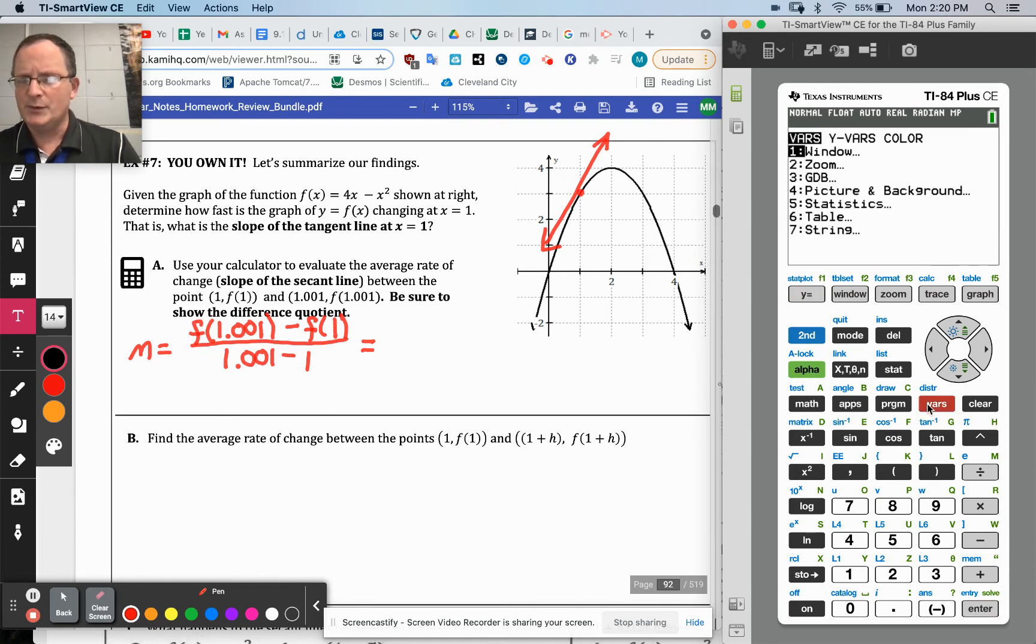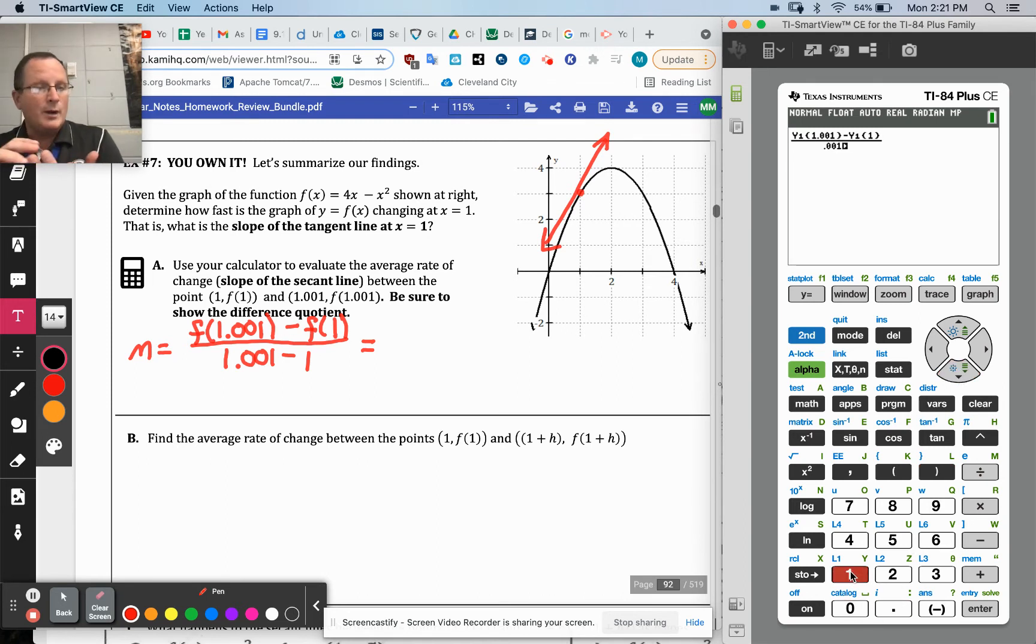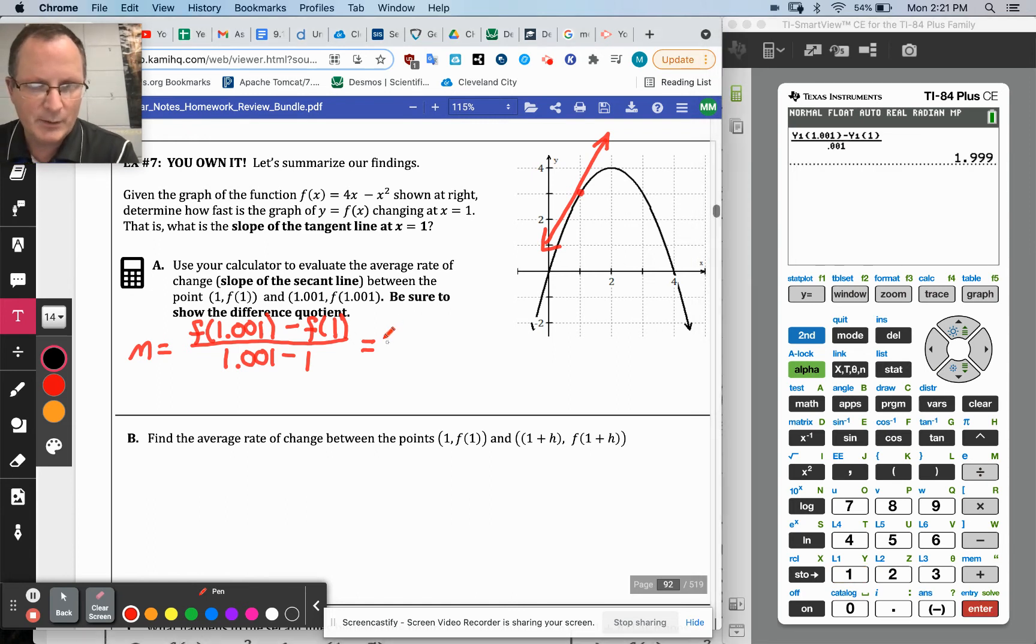And then the bottom would be those two subtracted, by those two I mean the x values. Let's have the calculator do that for us. So I went ahead and went to y equals and I typed in the function 4x - x². Then I want to go here and have myself a pretty fraction. And then go to variables, Y variables, function, y1, and I want to have that evaluated when it's 1.001. And then I know I could do this one by hand, but let's just be consistent. Variables, y variables, and then at 1. And then in the denominator, it's just 0.001. And boom. Man, that's close to 2. If you were going to think, what is the actual instantaneous rate of change there? Maybe it's 2.